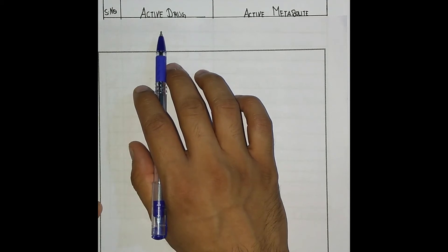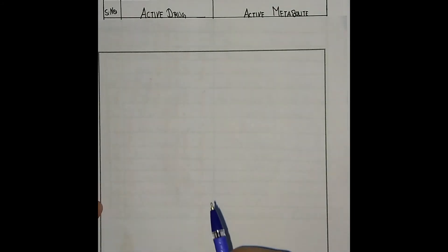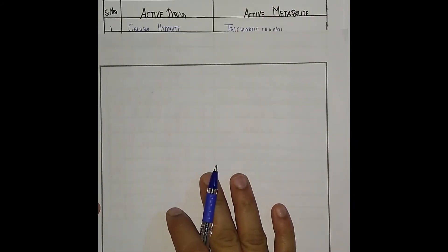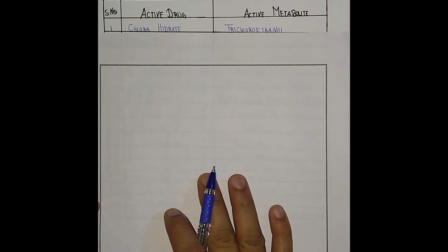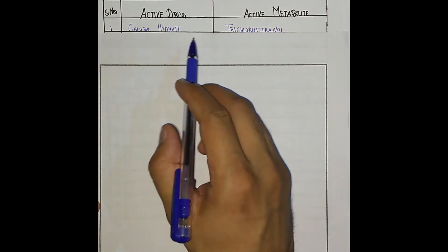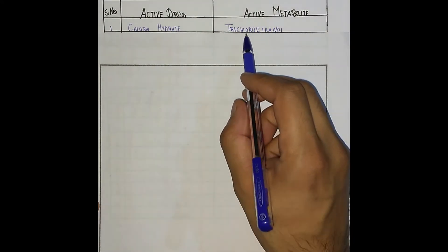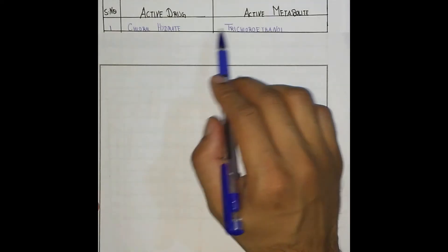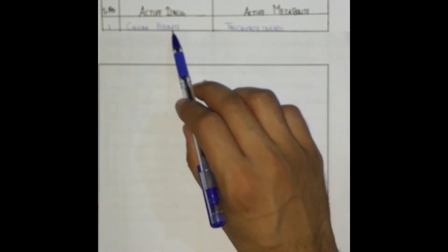There are some important drugs we just extracted from the Tripathi book KDT of pharmacology. So let's start. First one: what is the active metabolite of chloral hydrate? The active metabolite of chloral hydrate is trichloroethanol. Here the active drug is given and its active metabolite.